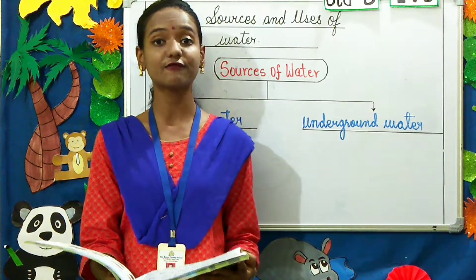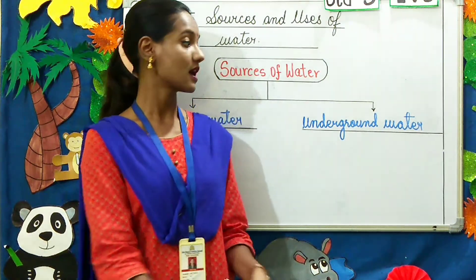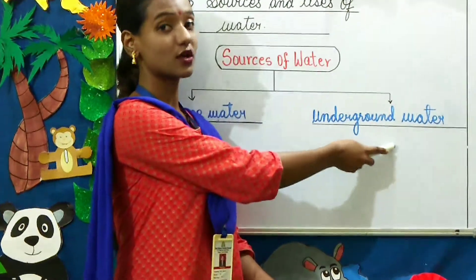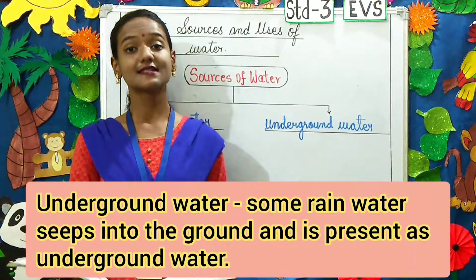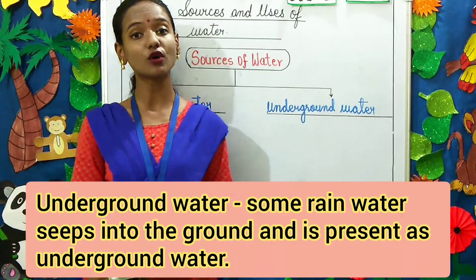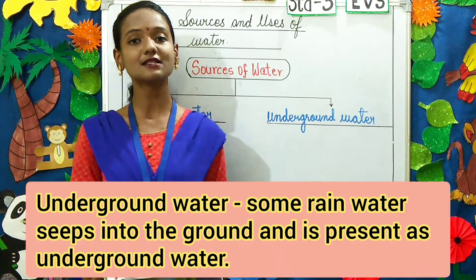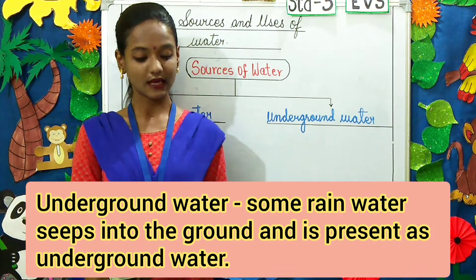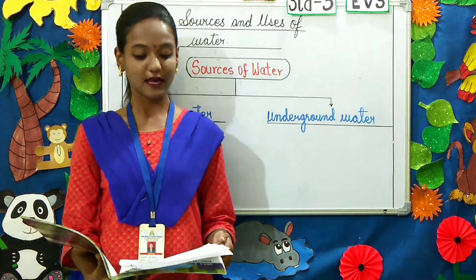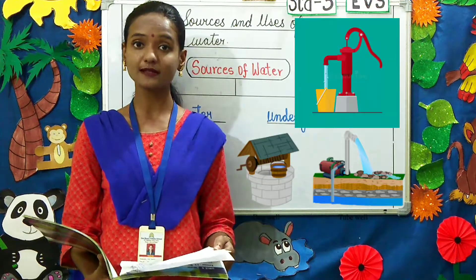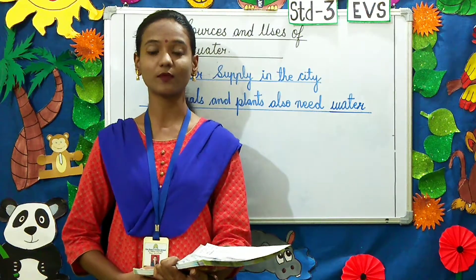It is very unfit for human consumption. Moving on to the second source — underground water. Some rainwater seeps, meaning goes into the ground, and is present as underground water. The underground water is drawn out with the help of hand pumps, tube wells, and by digging wells.